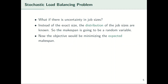But this is not the only case one can imagine, and there might be uncertainty in the job sizes. In the stochastic version of the load balancing problem, the job sizes are random variables instead of fixed real values, and their distributions are known. Note that two random variables may have different distributions. Now the makespan itself would be a random variable, so the goal would be minimizing the expected makespan.